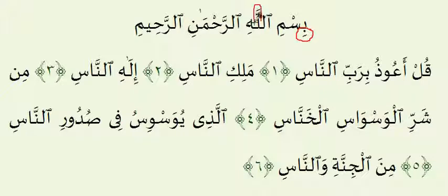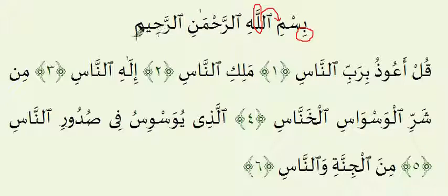Bismillahirrahmanirrahim. The Laam in the word Allah is light because it is preceded by a kasrah under the meem. Every time you see the word Allah appear in the Quran, look at what comes before it — is it a Fathah, a Dhammah, or a Kasrah? If it's a Kasrah, you want the Laam to be very light. The Ra in Ar-Rahman and Ar-Rahim is heavy and thick because of the Fathah above each Ra, so each Ra is maftooh and should be read in a heavy way: Ar-Rahmanirrahim.